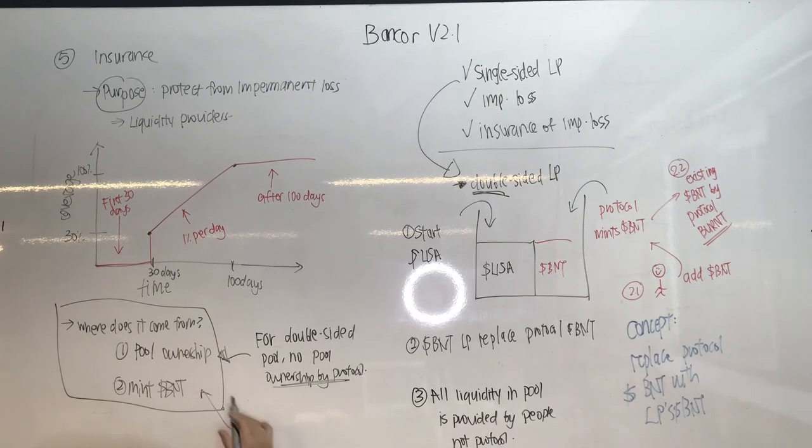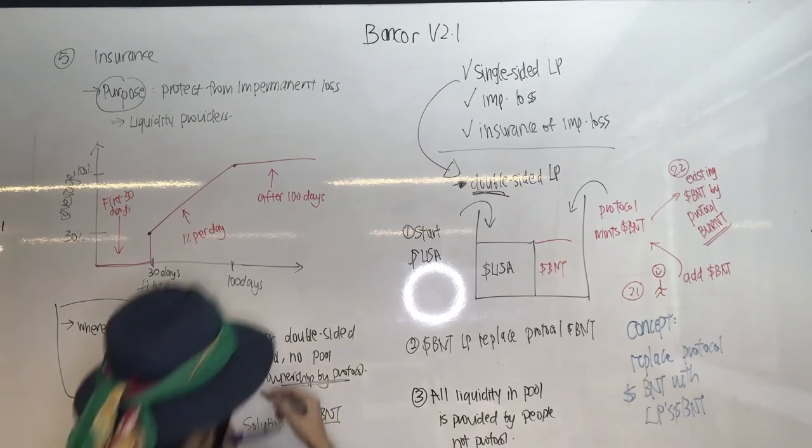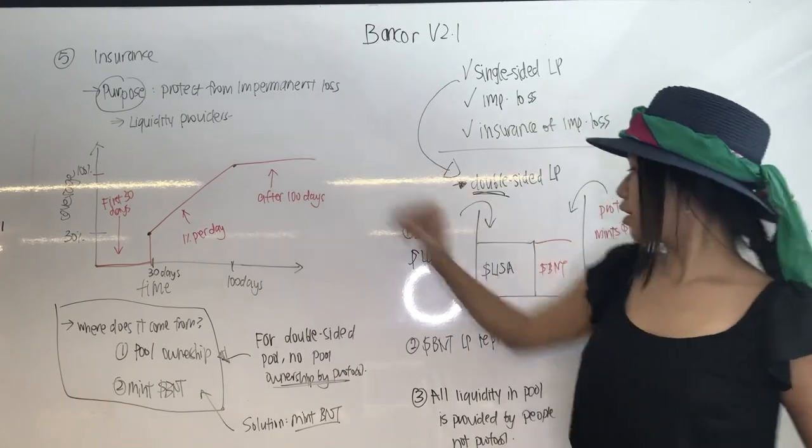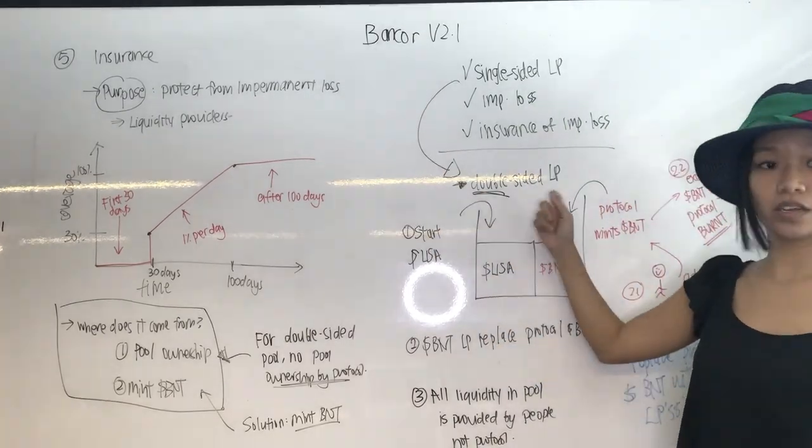Still, we could have kind of like double-sided plus protocol BNT involved if partially, part of the BNT tokens are minted by the protocol and part of it are given by liquidity providers.